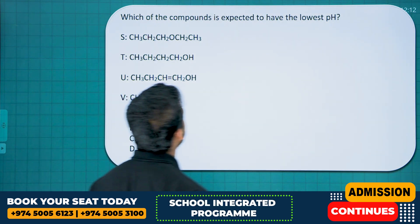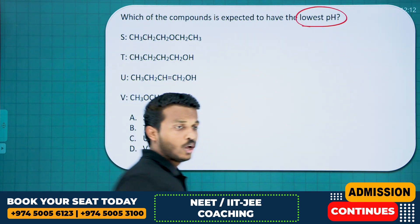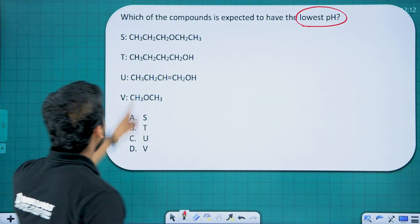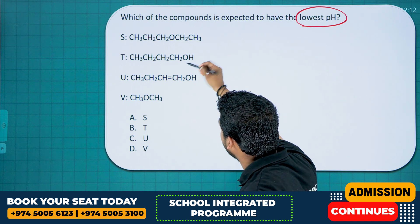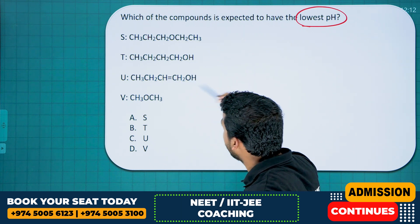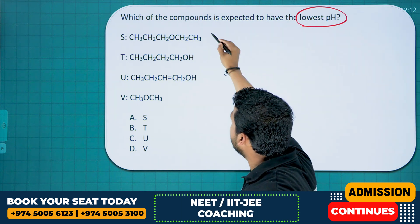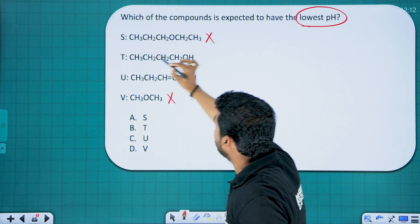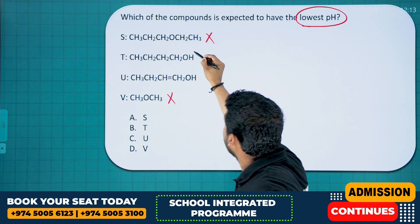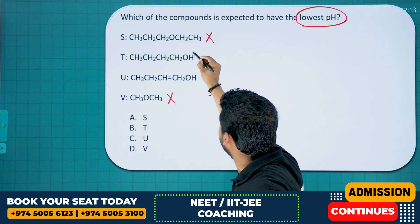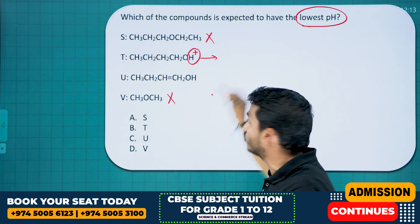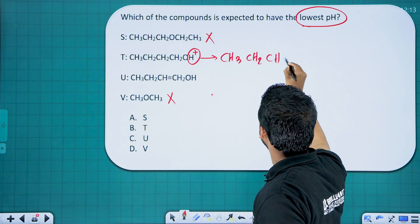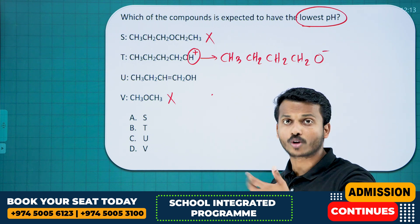Next question: Which compound is expected to have the lowest pH? Lowest pH means more acidic. We have an ether, an alcohol, an enol, and another ether. Ether is less acidic than alcohol. Among M, T, and U — which alcohol is more acidic? Acidity means the compound has to lose H+. If it loses H+, it forms a butoxide ion: CH3CH2CH2CH2O−.